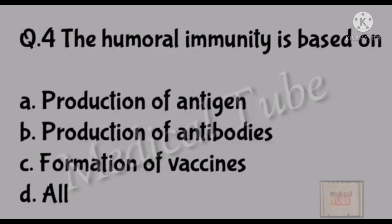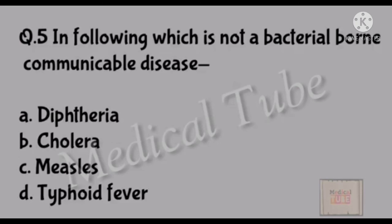Fourth number question: The humoral immunity is based on? Correct answer is B: production of antibodies. Fifth number question: Following which is not a bacterial communicable disease? Correct answer is C: measures.